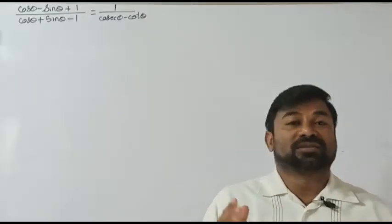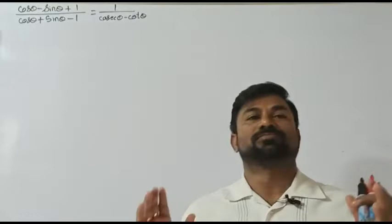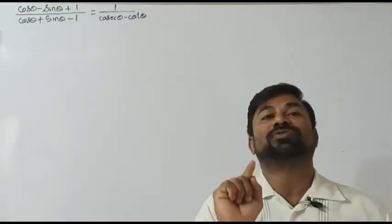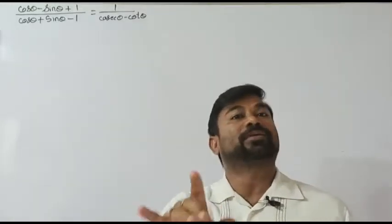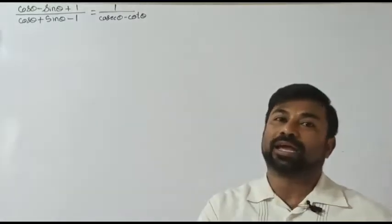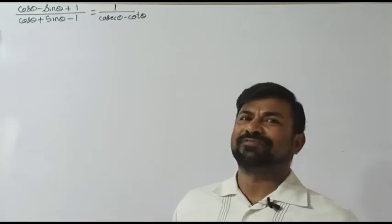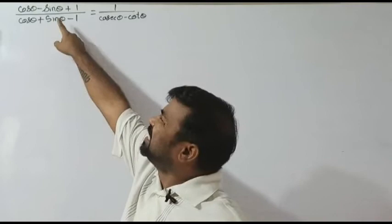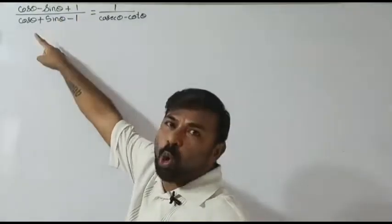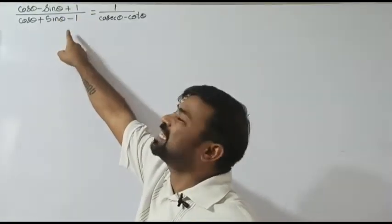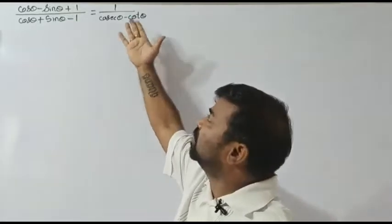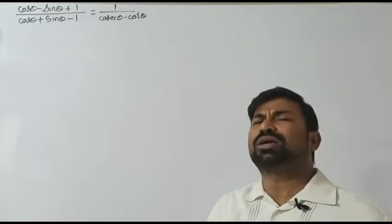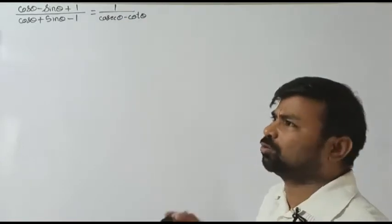Hello everyone, myself Marathi, welcoming you all to this math video session. In this topic I'm going to deal with a trigonometrical problem — a little bit risky, but I'll make sure I can help you get it. The question is: (cos θ − sin θ + 1) divided by (cos θ + sin θ − 1), and the answer we need to reach is 1 / (cosec θ − cot θ).